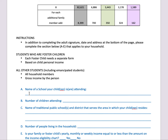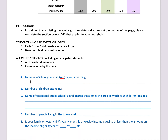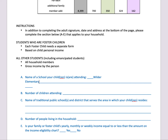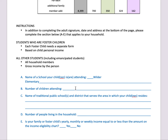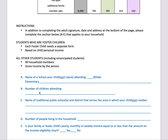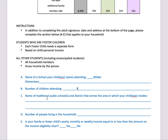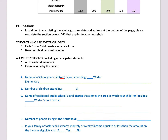What we're looking for is to complete sections A through E. You'd go through putting in the name of the school that your children are attending — so if it were Wilder Elementary, you would put in that information there. You'd put in the number of children attending the school, and also fill in the name of the traditional public school and district that serves the area where you reside. So if you're in the Wilder School District boundaries, you would put Wilder School District, number 133.